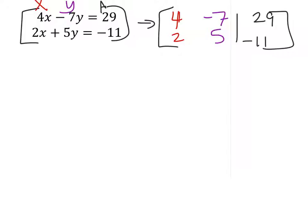So from here, once again, just using the process of elimination, in order to get a 0 right here, what I'm going to do is I'm going to take row 2 and multiply it by a negative 2.